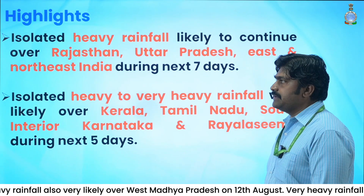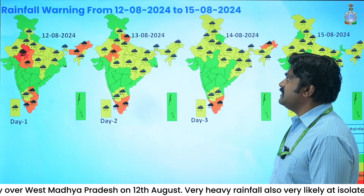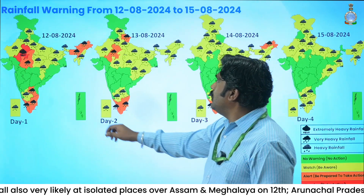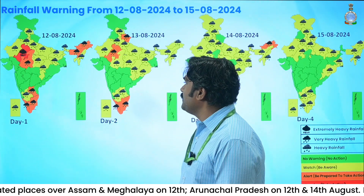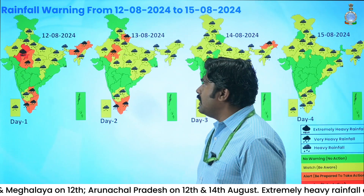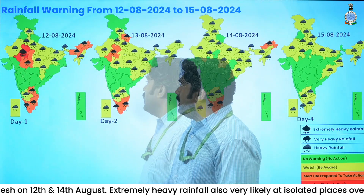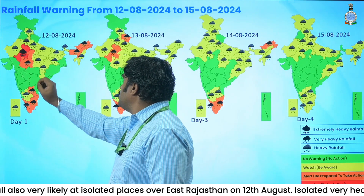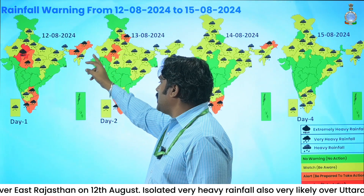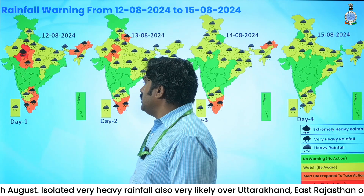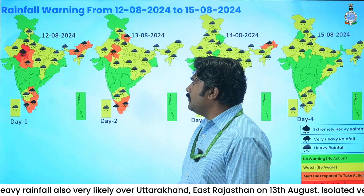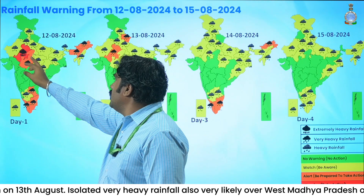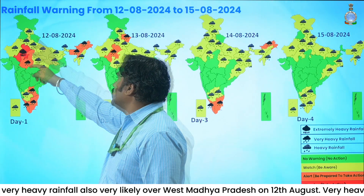This is the rainfall warning for the next four days. As on today, 12th August, an extremely heavy rainfall warning has been issued over east Rajasthan, shown in red. Heavy to very heavy rainfall warnings have also been issued over west Madhya Pradesh, Arunachal Pradesh, Assam, Meghalaya, Tamil Nadu, Kerala, Rayalaseema, and a heavy rainfall warning shown in yellow covers west Rajasthan and Madhya Pradesh.